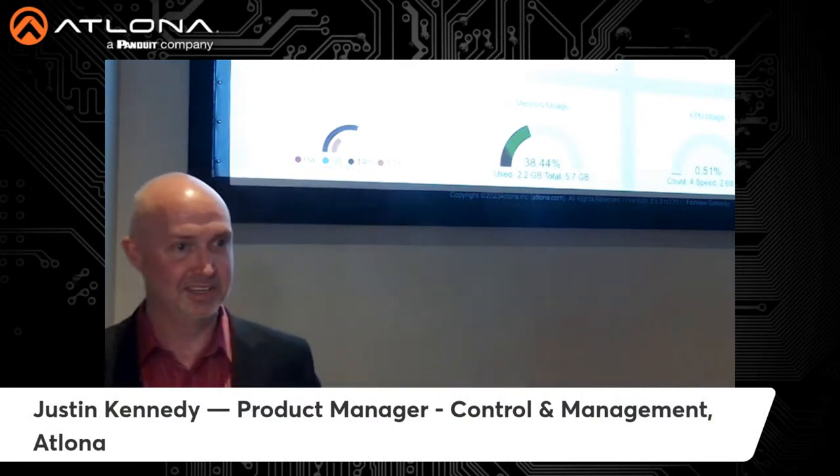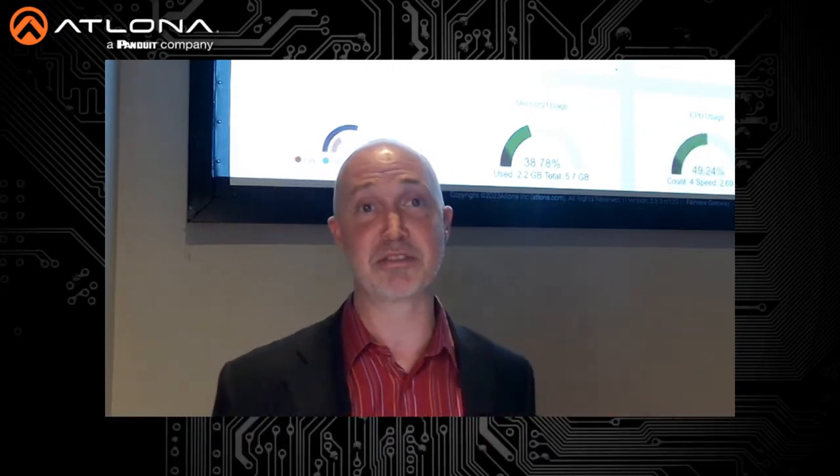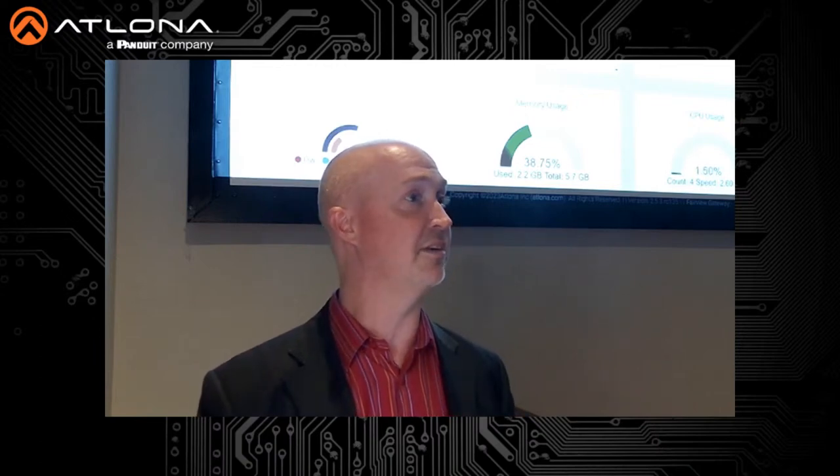We're going to spend a little bit of time briefly talking about our control platform with Atlona. Our control platform is called Velocity, and it's a little bit different than the typical control platform you might be familiar with. There are three main pillars of Velocity. The first is control — your standard control for third-party equipment, Atlona equipment, integration with other devices, touch panel user interfaces, scheduling, and a nice subset of asset management as well.